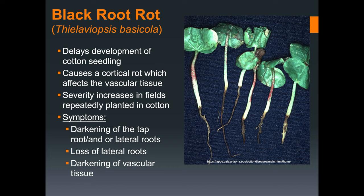It is also known for causing a cortical rot in the vascular tissue. When looking for signs and symptoms, you will see a darkening of the taproot and lateral roots, or a loss of lateral roots overall. You will also be able to see darkening within the vascular tissue.